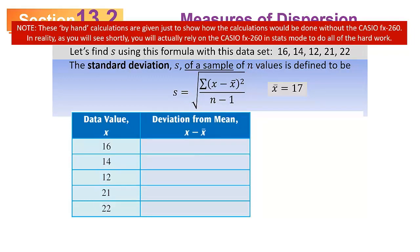First, make a column for the deviations from the mean. In the formula there's x minus x-bar. So calculate the difference of each data point from the mean. Take 17 away from 16, get minus 1. Take 17 away from 14, get minus 3. From 12, minus 5. From 21 and 22, you get 4 and 5. There's your deviations from the mean.